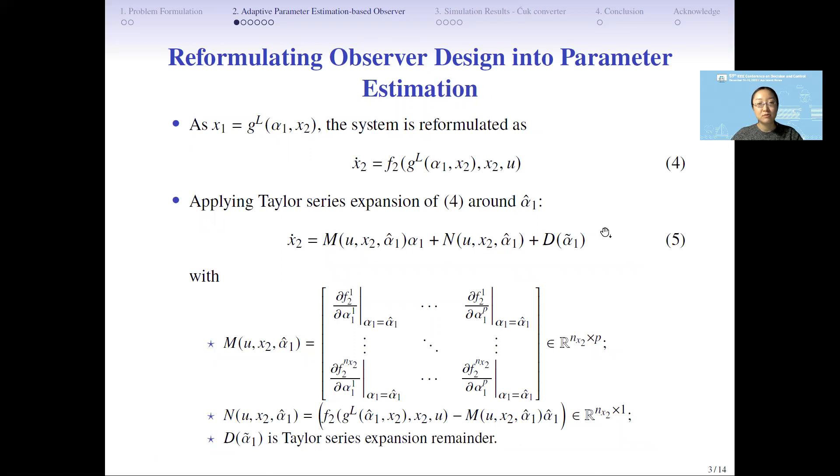Based on the assumption, the system could be reformulated as equation 4. You could see in this equation, the only alpha-1 is unknown parameter. That means the observer design problem is transformed to the parameter estimation problem.